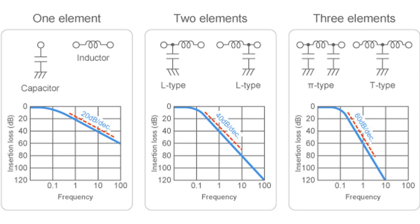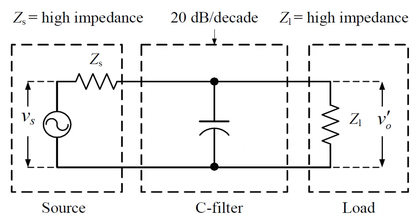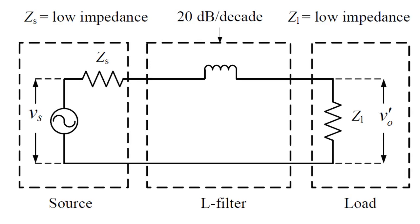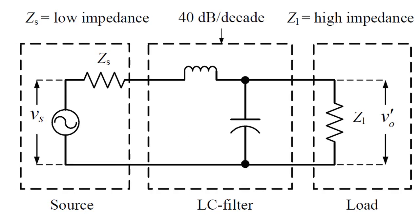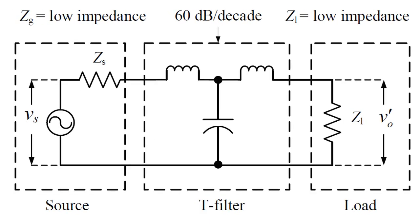The filter behavior can be significantly affected if the terminating impedances at both ends are not appropriate. The C filter will provide 20 dB per decade insertion loss rate with a high impedance system, but it is ineffective if employed in a low impedance system. On the other hand, the L filter is suitable for a low impedance system but not for a high impedance system. To gain higher insertion loss rates, CL, LC, Pi, and T filters need to be used.